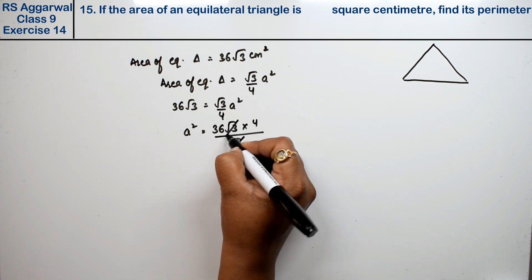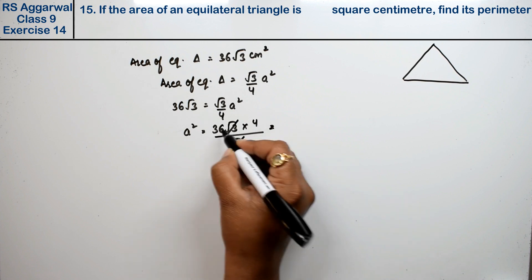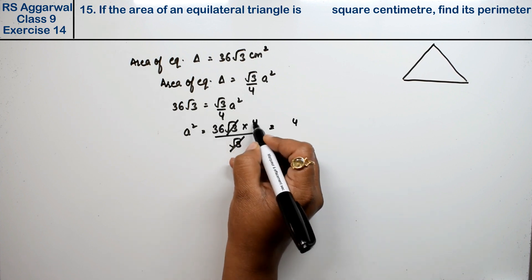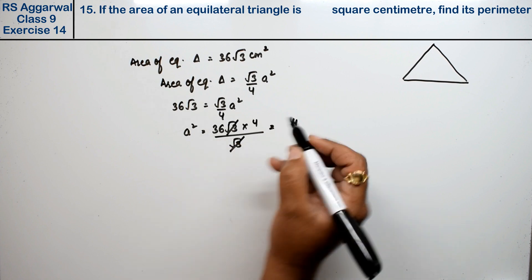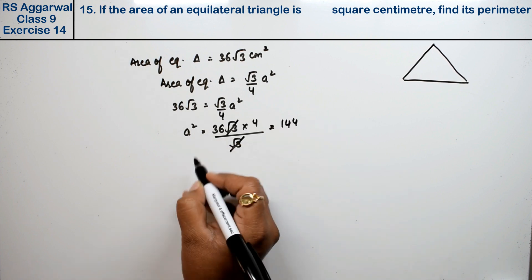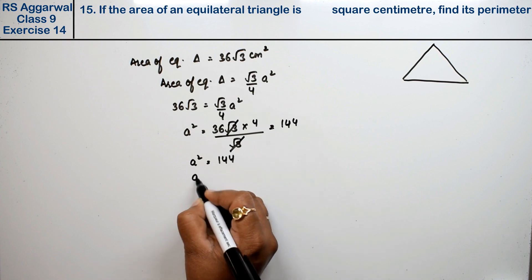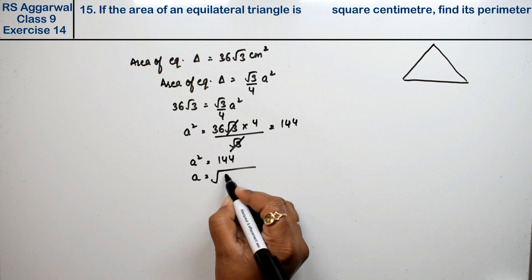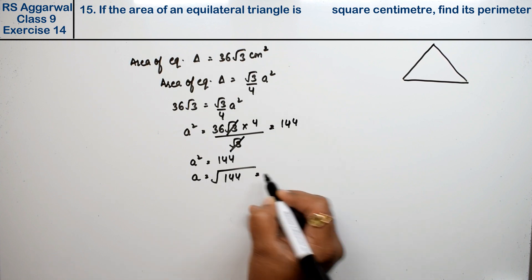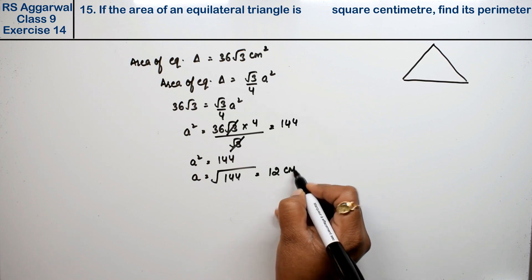Root 3 from root 3 is cancelled. 4 times 6 is 24, carry 4. 4 times 3 is 12, 13, 14. Now, a square equals 144. Square root of 144? We know that this is 12 square, so a equals 12 centimeters, which is the side.